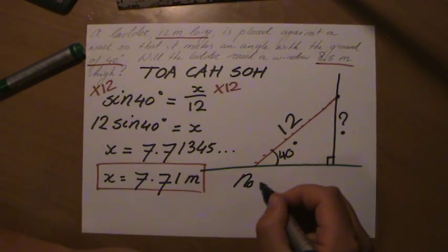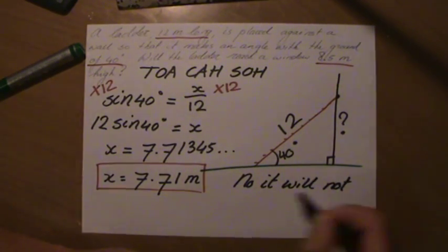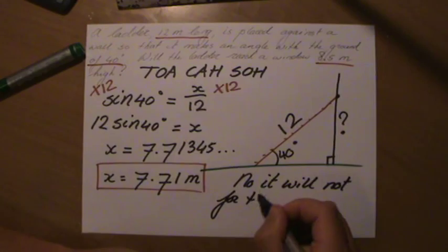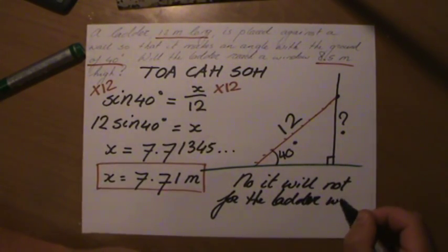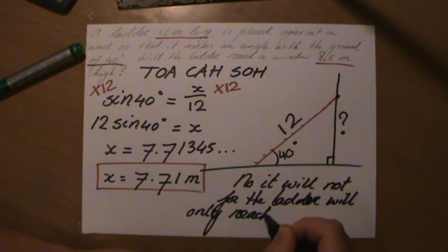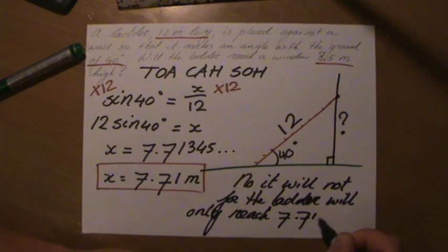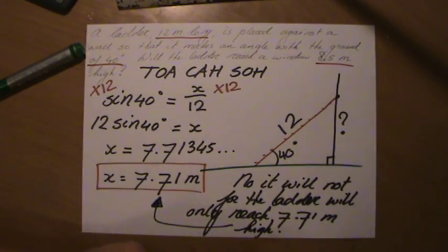But that's not the question. The question is, will the ladder reach a window 8.5 meters high? So the answer is no, it will not, for the ladder will only reach 7.71 meters high. And we can put an arrow there to show everybody where we got that 7.71 meters from.